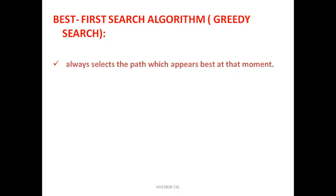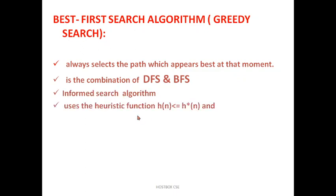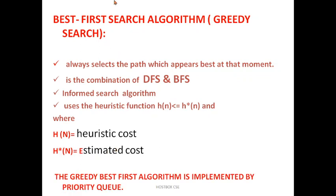If you want to reach the goal node it always helps to select which node you want and which is the shortest path. It's a combination of DFS and BFS, that is breadth-first search and depth-first search. It's one of the informed search algorithms. It always uses the heuristic function h(n) less than or equal to h star n, where h(n) equals heuristic cost and h star n equals estimated cost. The greedy best-first algorithm is implemented by the priority queue.